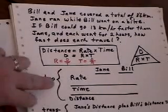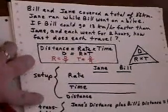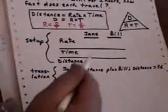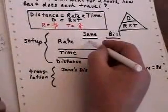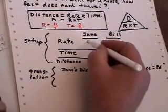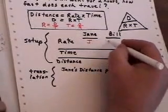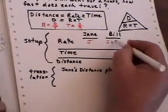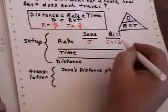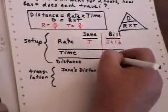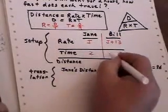So I've set these up, and let's fill in what we know on this rate here. I know that Bill was 13 kilometers faster than Jane, so I'm going to do J plus 13, and J for Jane's rate. I know that each took two hours.